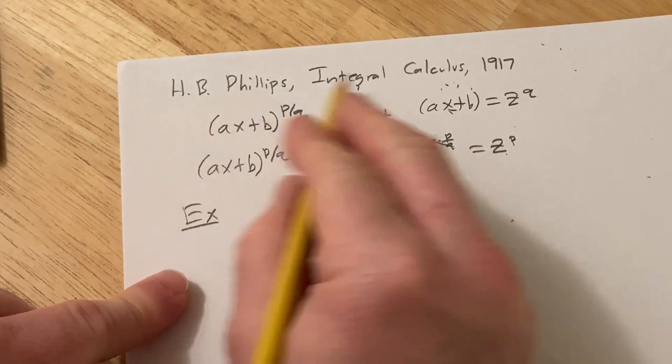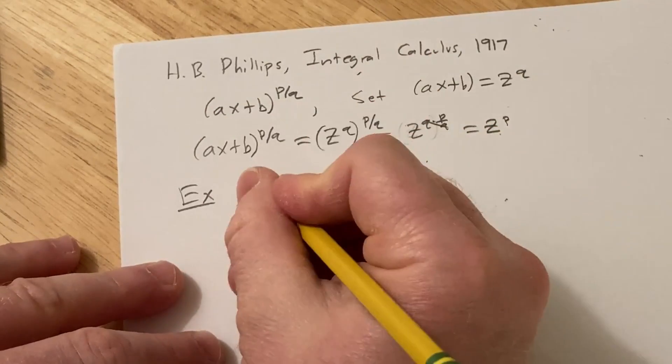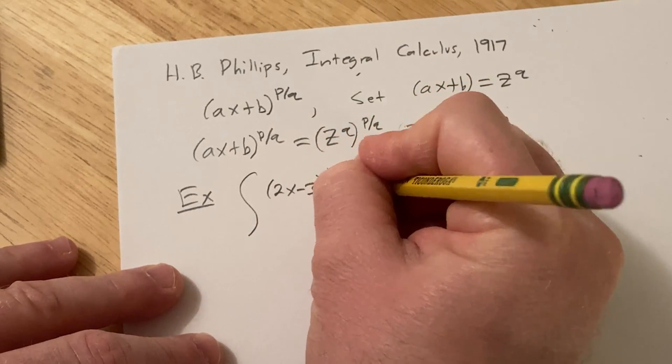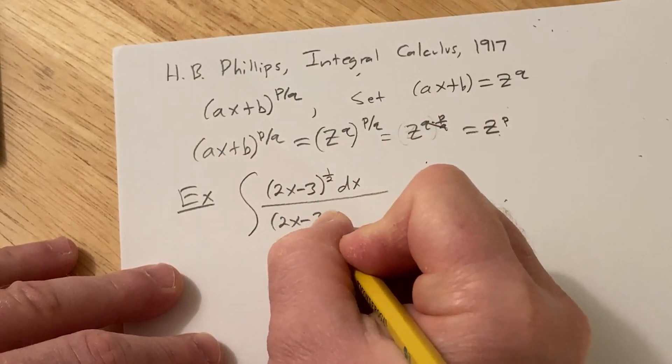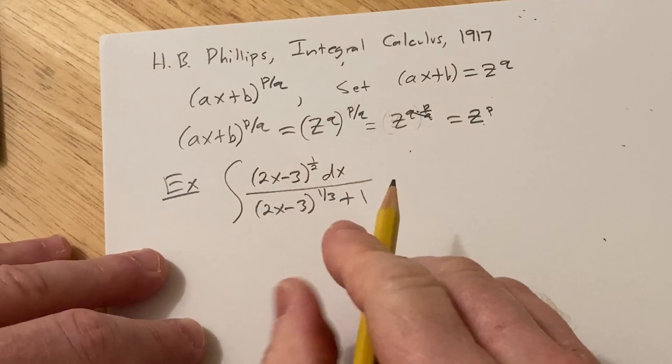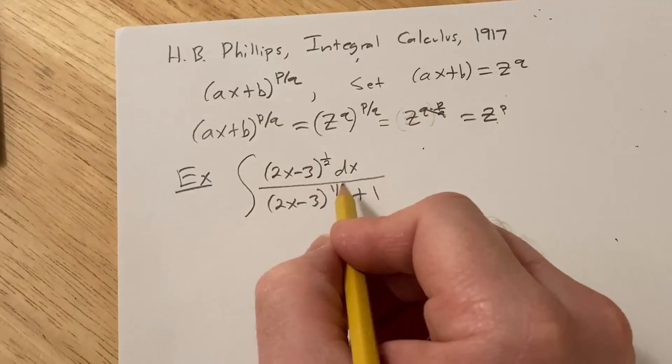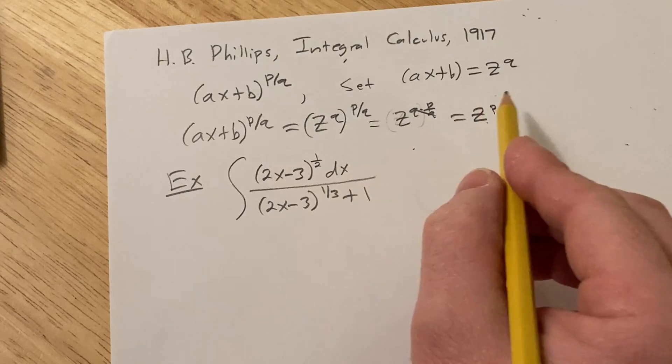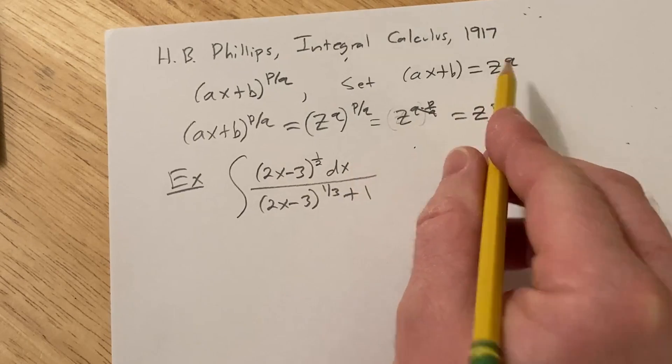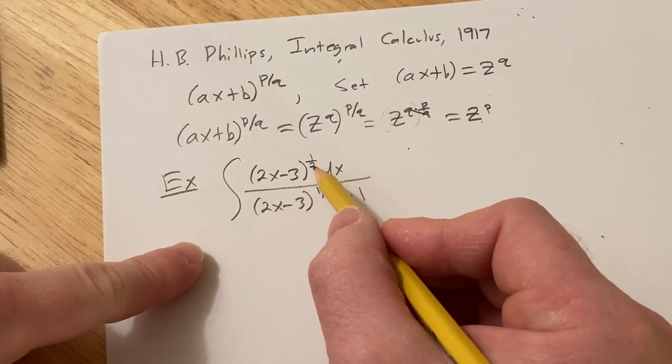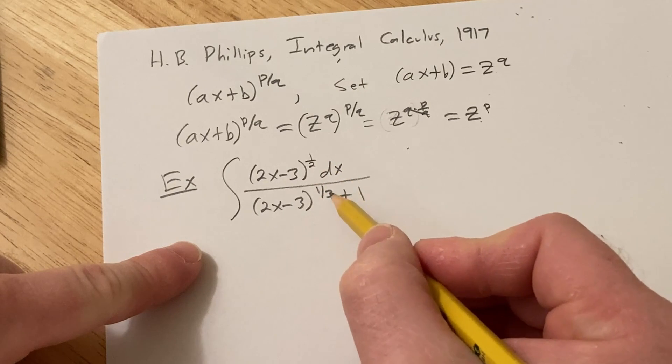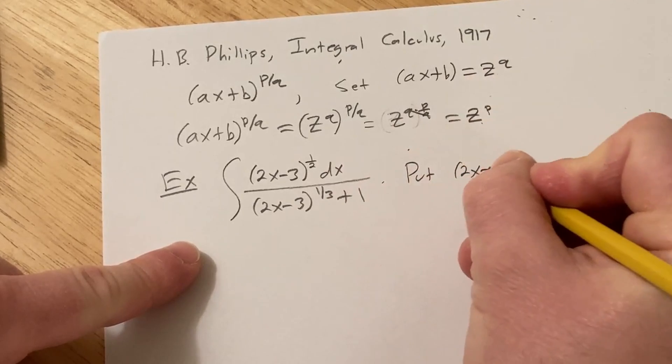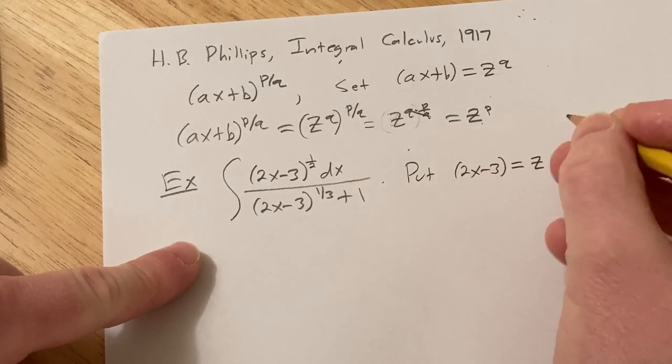So let's go ahead and do a harder example. This is from the book by H.B. Phillips called Integral Calculus from 1917, and this example is actually pretty tough. This is (2x-3)^(1/2) / [(2x-3)^(1/3)+1]. Simply doing this substitution is not going to be enough because we need to get rid of both rational exponents. To get rid of the one half, we would use z squared. To get rid of the one third, we would use z cubed. So if we use z^6, we can get rid of both. We're going to put 2x-3 equal to z^6.